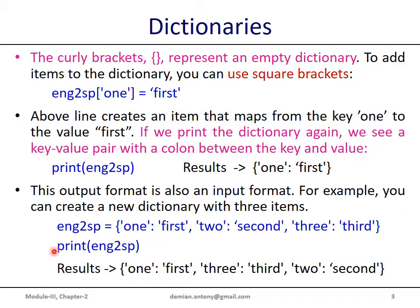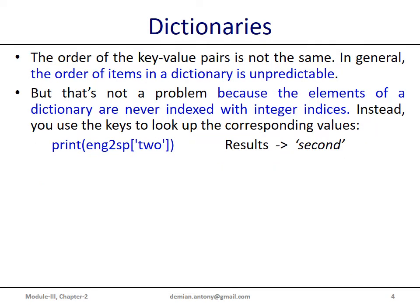If you print after creating this dictionary, we get the same representation as the input format. The order of the key-value pairs is not the same — that's why I said it is an unordered collection. There is no ordering among the items present in the dictionary, and this order is unpredictable. This is not a problem because elements of the dictionary are never indexed with sequential integer values. Instead, the values are always stored based on the keys.